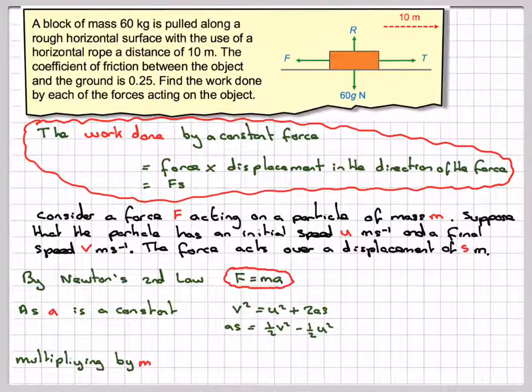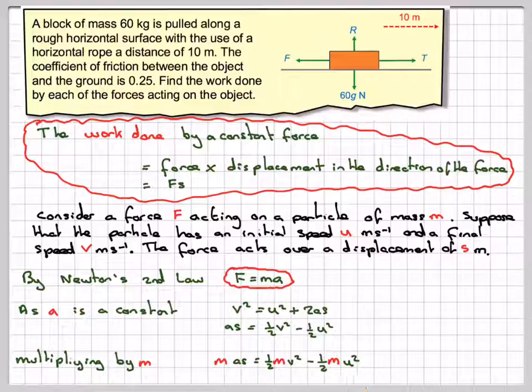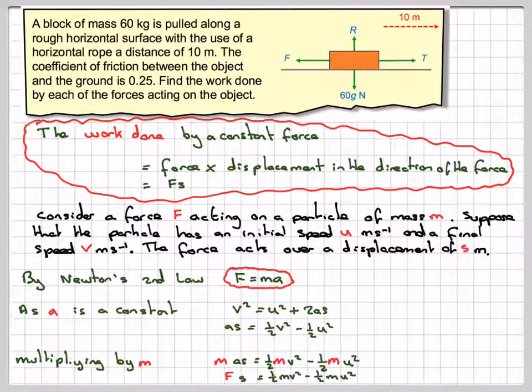And if we multiply by M, everything by M, we get M A S is equal to a half M V squared minus a half M U squared. Well, M times A is equal to F. So we get F times S is equal to a half M V squared minus a half M U squared.